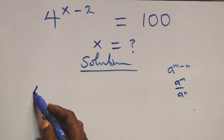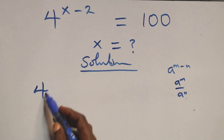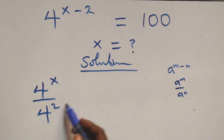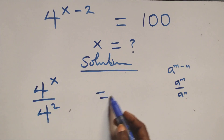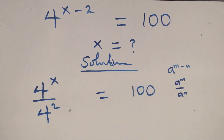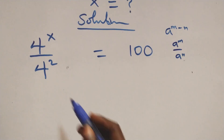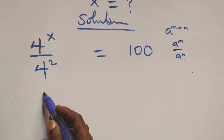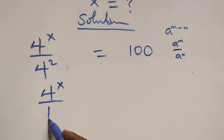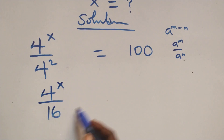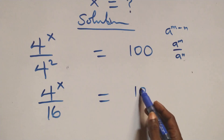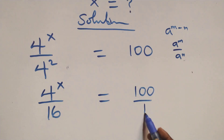Here we have 4 raised to power x over 4 squared equals to 100 on this side. We can write this as 4 raised to power x over 4 squared, where 4 times 4 is 16, equals to 100 over 1.